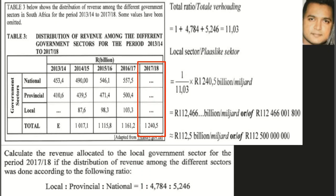The heading states figures are in billions, so we have 1240.5 billion. To write 1240.5 billion in full: three zeros make a thousand, six zeros make a million, and nine zeros make a billion. When we multiply through, we get 112.46 billion, which keeps with the format used in the table. We can write the full calculator answer alongside it, and rounding off gives us 112.5 billion.